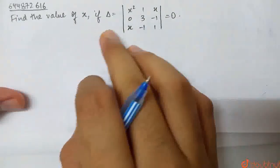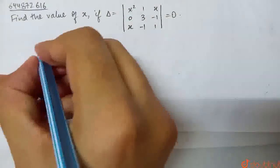Next question is, find the value of x if delta given by this is equal to 0. So we will solve the determinant.